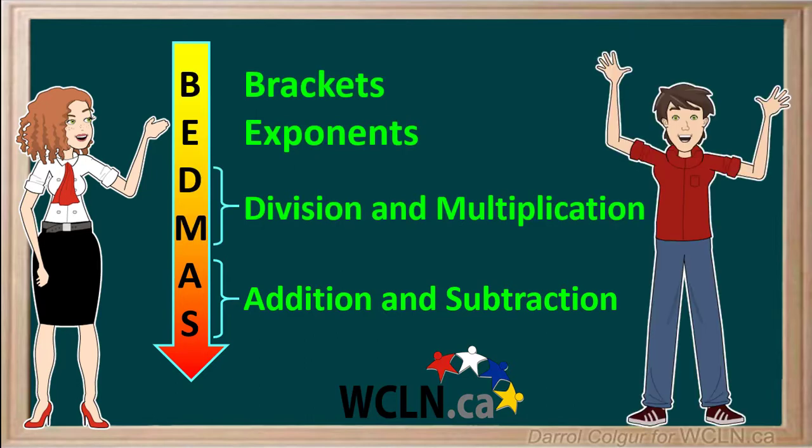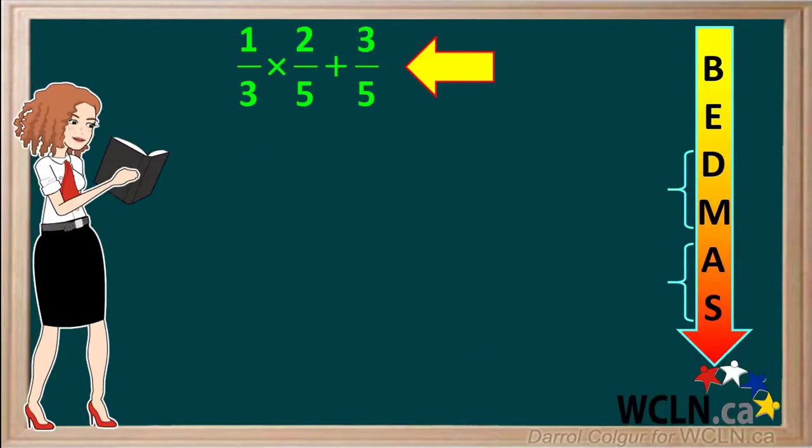So we can use BEDMAS for helping us with questions which involve more than one operation with fractions. Let's do some examples. We want to find the answer to one-third times two-fifths plus three-fifths. There are no brackets in this question, so we can skip this step. Also, there are no exponents in this question, so we can skip this step. We move down to division or multiplication. We see that we have a multiplication in this question. It's one-third times two-fifths, so we carry this out first.